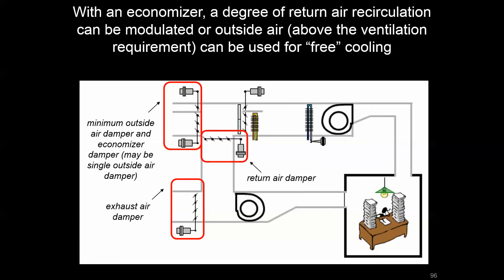Additional damper configurations are possible even on the economizer side. Instead of just return air, exhaust air, and outside air dampers, there may be a separate minimum outside air damper that could be a binary open-and-close, meant to handle the ventilation air separately from the free cooling air that the outside air damper would facilitate.